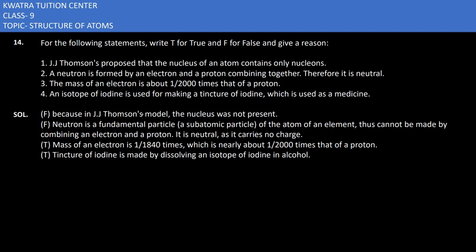Here in this one, we have to start with the following part. It says for the following statements, write T for true and F for false and give a reason. J.J. Thomson proposed that the nucleus of an atom contains only nucleons. So J.J. Thomson ne kya bataya tha? Usne to nucleus ke bare mein naam hi nahi liya tha. That would be a false statement because nucleus ka usne kuch bhi naam nahi bataya. Therefore, the first statement is false.